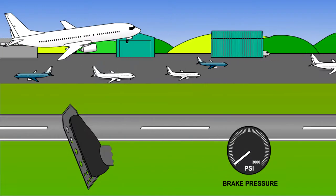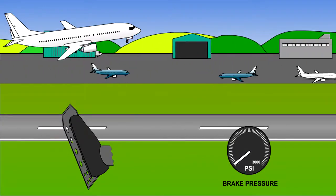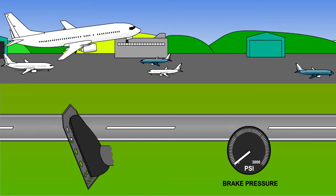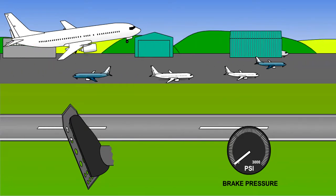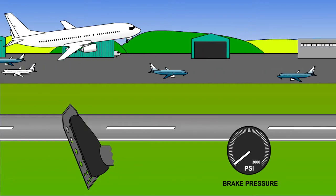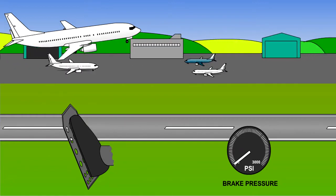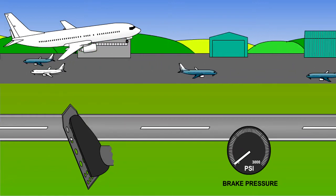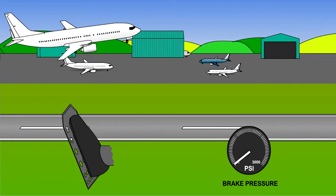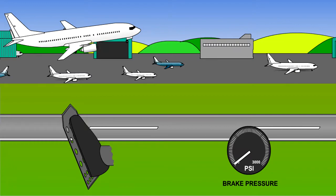Touchdown protection prevents the brakes being applied before touchdown. The electronic anti-skid unit will monitor the wheel speed and air-ground logic. If no signal is received, the brakes cannot be applied while the aircraft is airborne. On touchdown, the wheels spin up and apply a signal to the control unit, which will now allow the brakes to be applied.